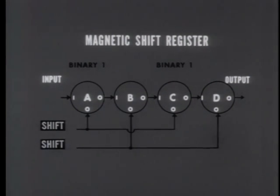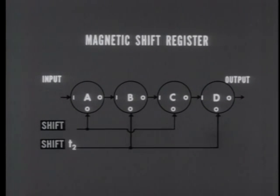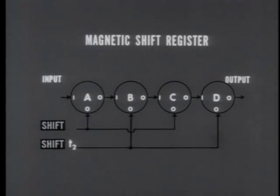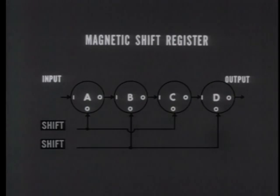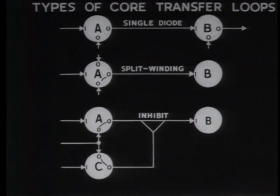Essentially, a register accepts information when it is available and delivers it when it is needed. Two rounds of shift pulses will send the information into the output from core D. A magnetic shift register can act as a speed buffer — for example, it can receive information from a relatively slow source like a teletypewriter operating at standard transmission speed, and then deliver it to a device that operates at high speed, like a magnetic drum. We've been looking at a serial register; it handles information serially, one bit at a time.